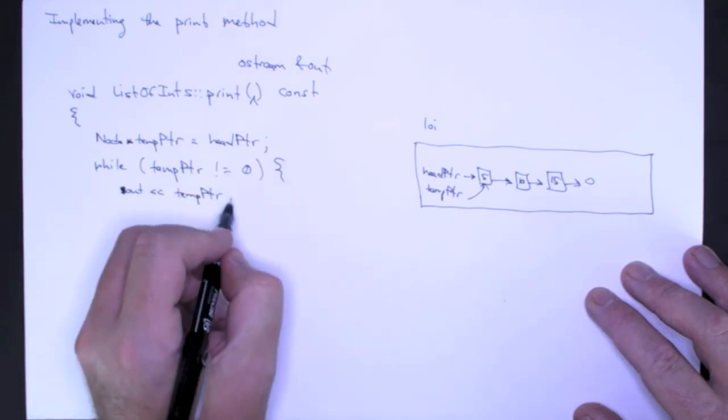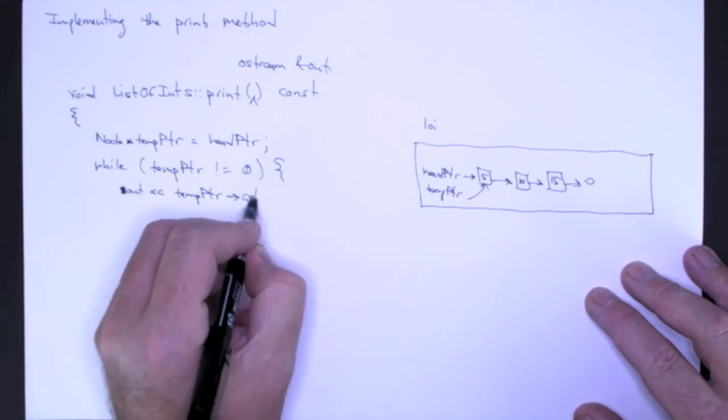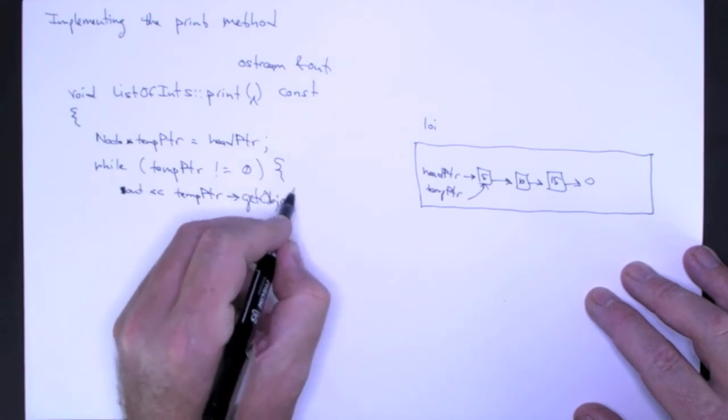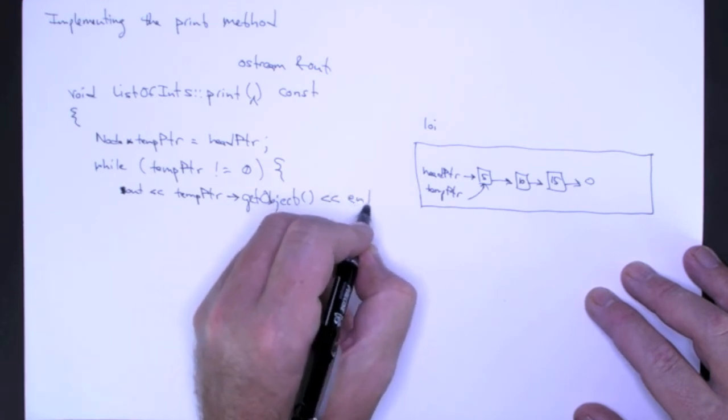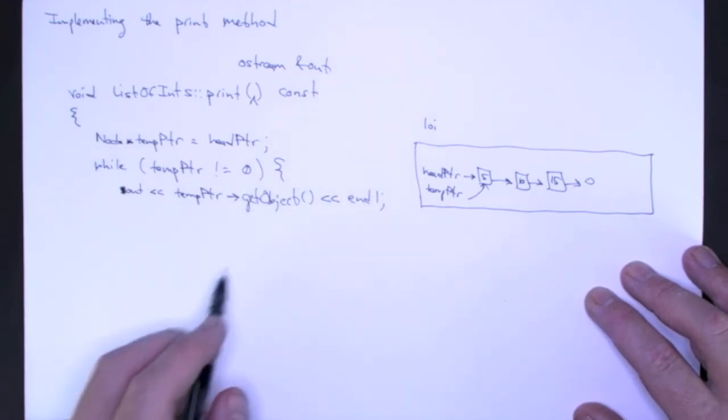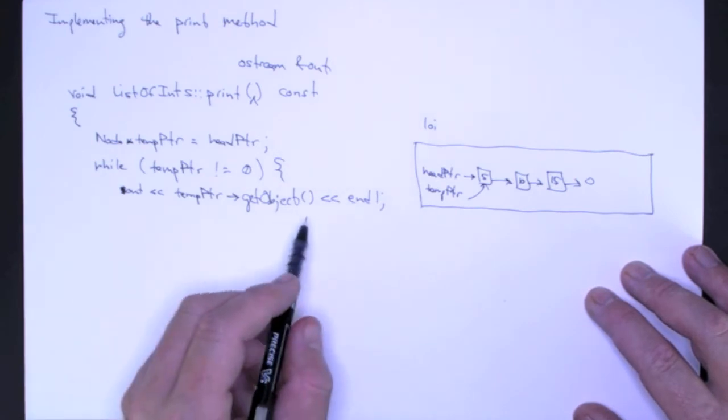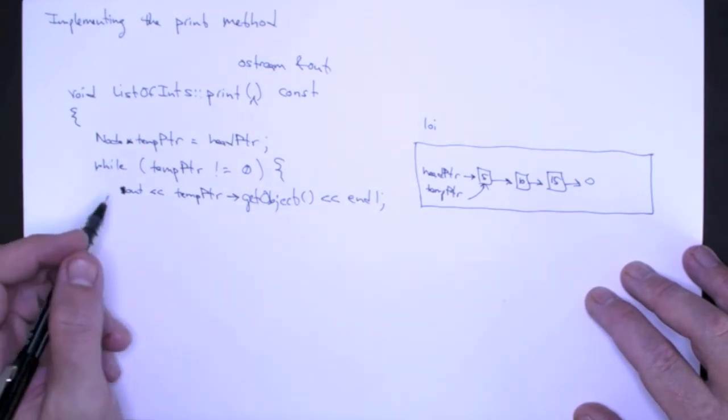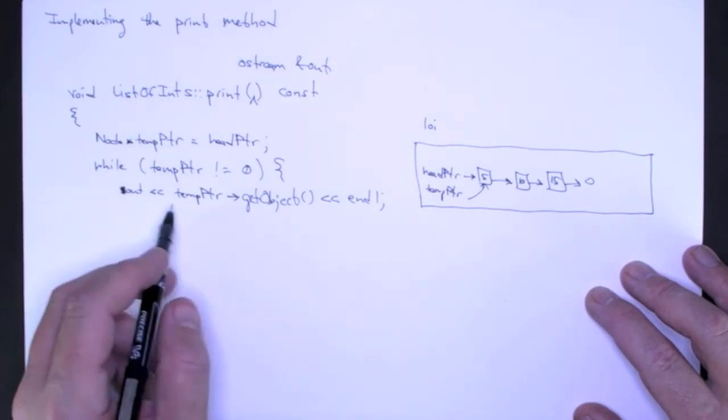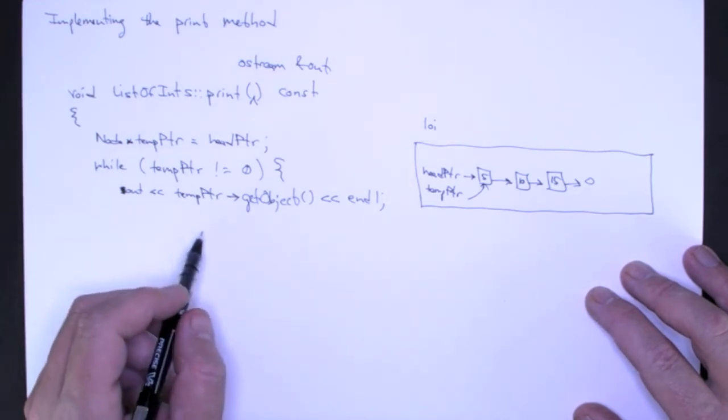And I want to print the object stored in the node that temp pointer points to. I can get that object by calling get object. I'll just assume that I want these objects to appear on an individual line. You can also imagine that maybe we want them to be comma separated, but for our purposes we'll just put them on each individual line.